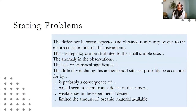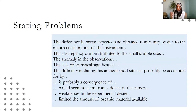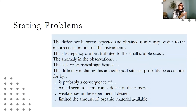The examples: 'The difference between expected and obtained results may be due to incorrect calibration of the instruments.' 'This discrepancy can be attributed to the small sample size of such and such.' 'The anomaly in the observations...', 'The lack of statistical significance...', 'The difficulty in dating this archaeological site can probably be accounted for by...', 'So and so is probably a consequence of such and such.', 'Such and such would seem to stem from a defect in the camera.', 'Weaknesses in the experimental design limited the amount of organic material available.'